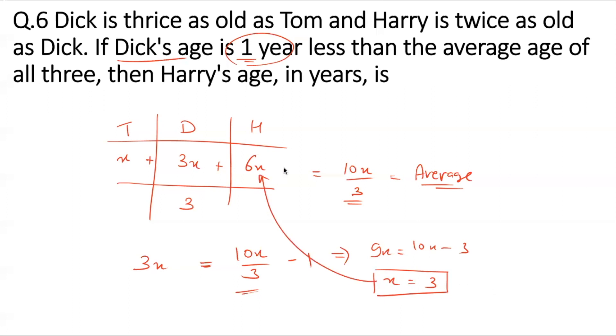If X is equal to 3, what is Harry's age we are supposed to find out, right? 6 into X, your answer is 18 years. Very simple, right? So moving away.